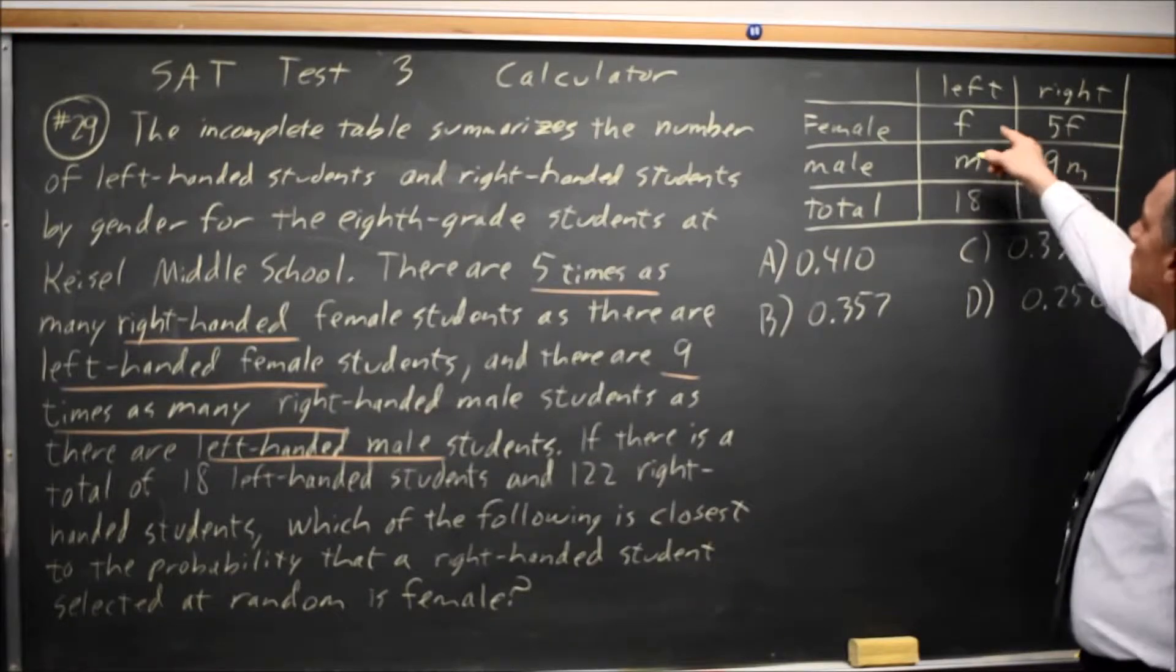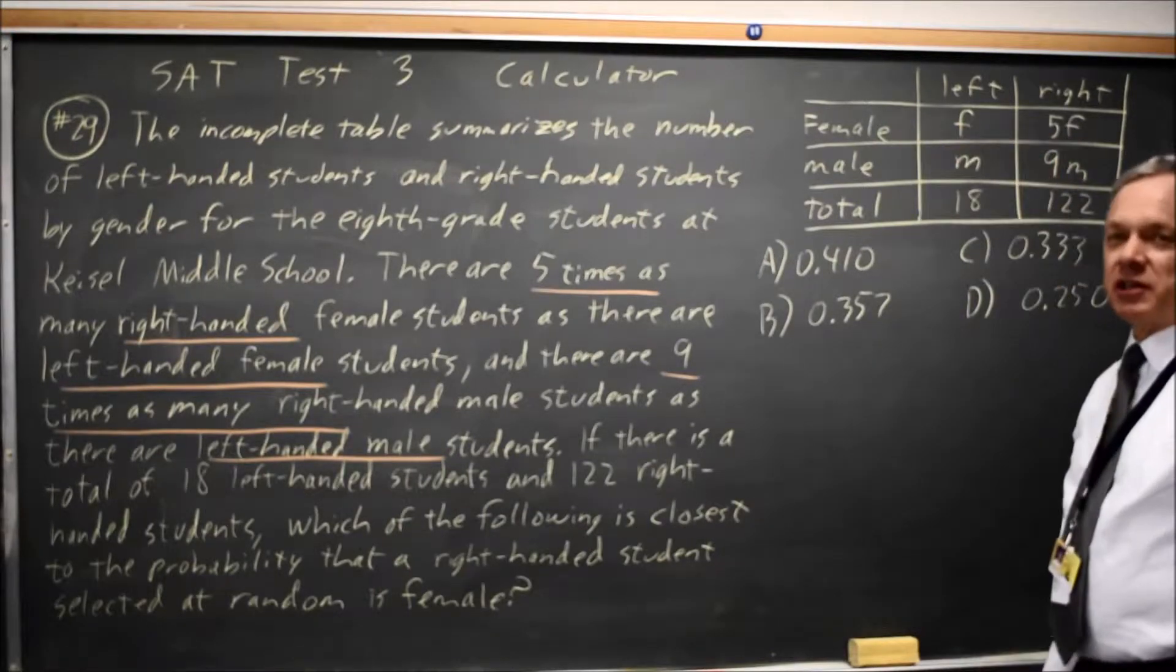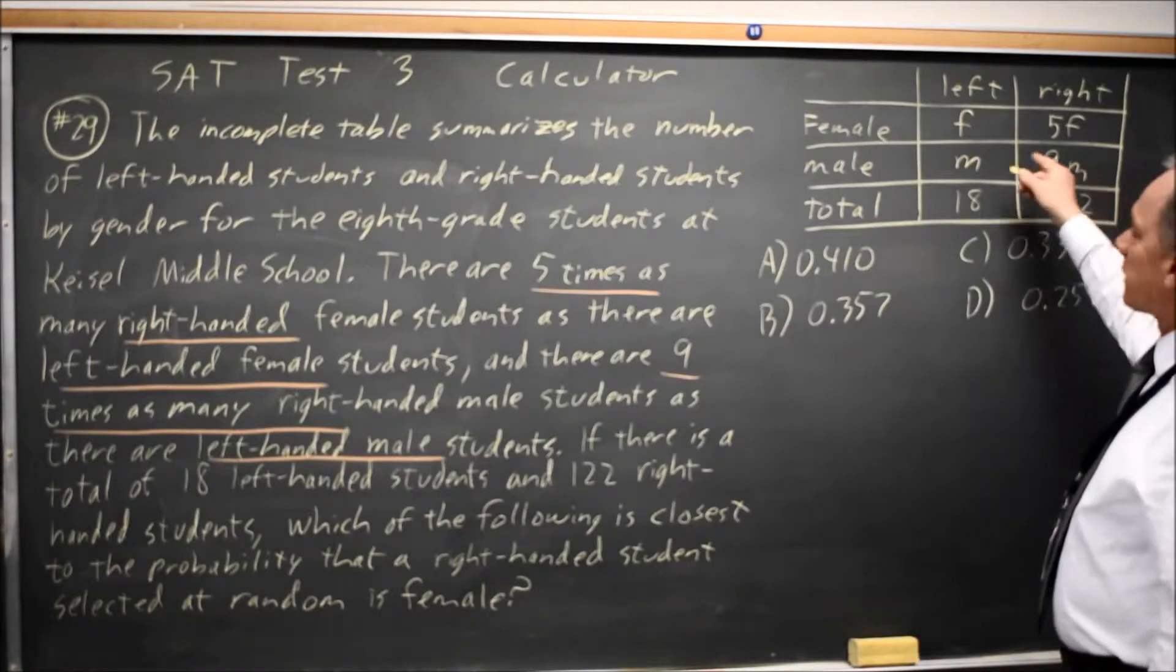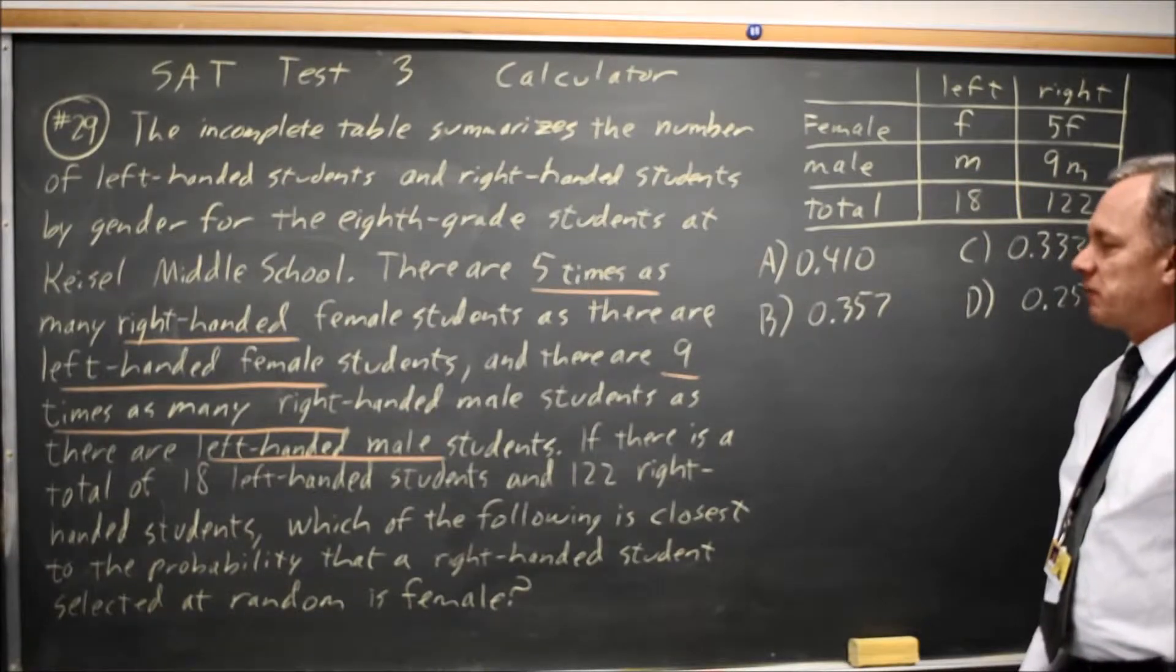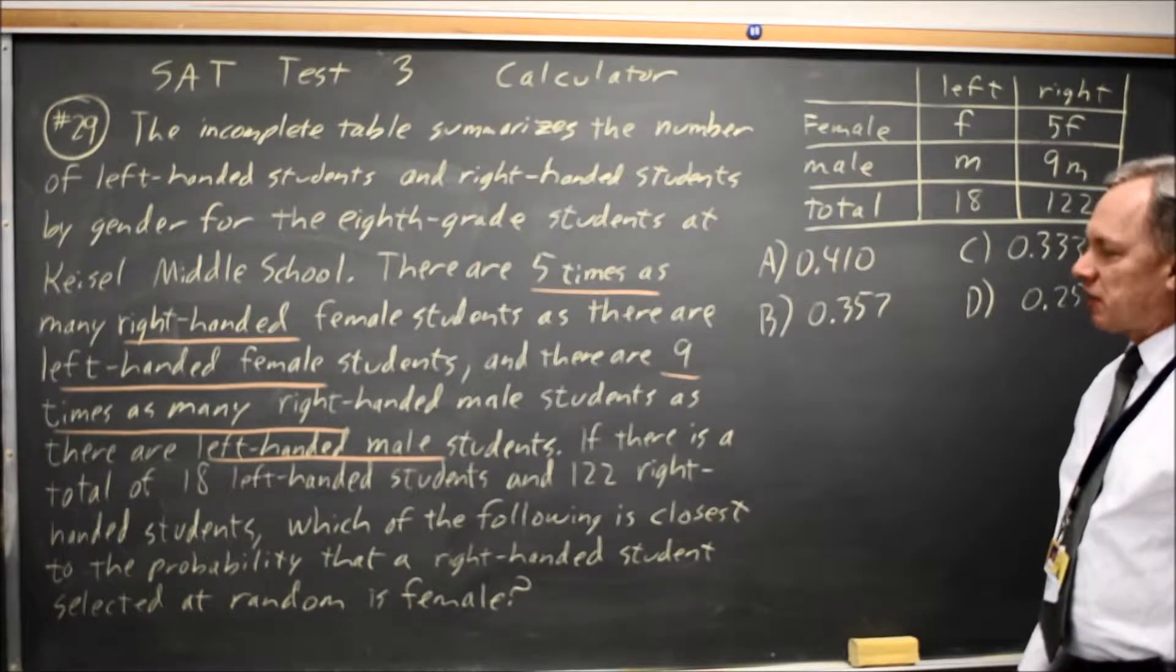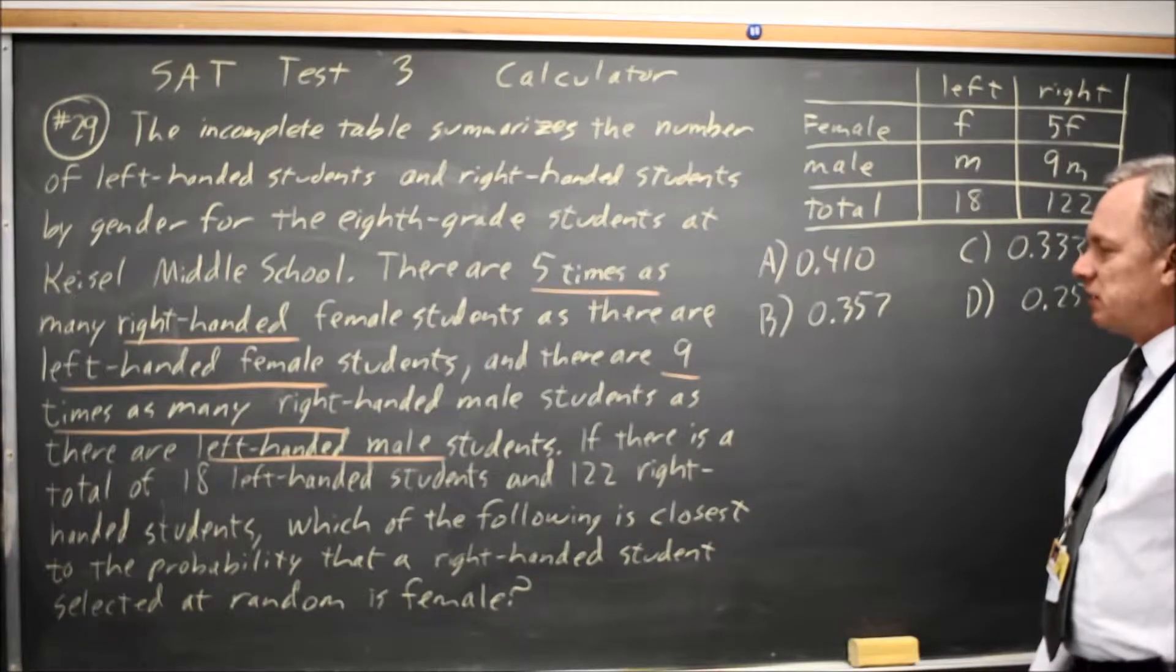As you see, whatever F is, 5F is five times as many, and the same for 9M being nine times whatever M is. So I've matched that first two-thirds of the problem.